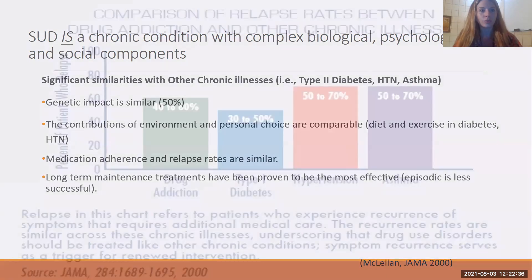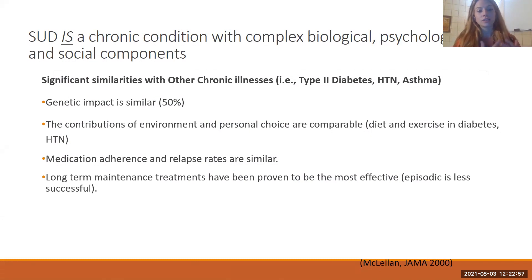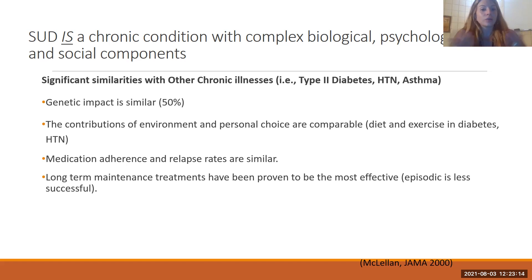To remove the stigma that substance use disorder is somehow unique, we should think about it in alignment with other chronic conditions that have a lifestyle or environmental component — like type 2 diabetes, high cholesterol, high blood pressure, asthma — because there's a heavy genetic component: the person is just bringing those genes to the table which have gotten activated, and there is an environment-person interaction contributing to the onset and maintenance of the condition. We also know their adherence to medication, relapse rates, and engagement in treatment looks very similar.